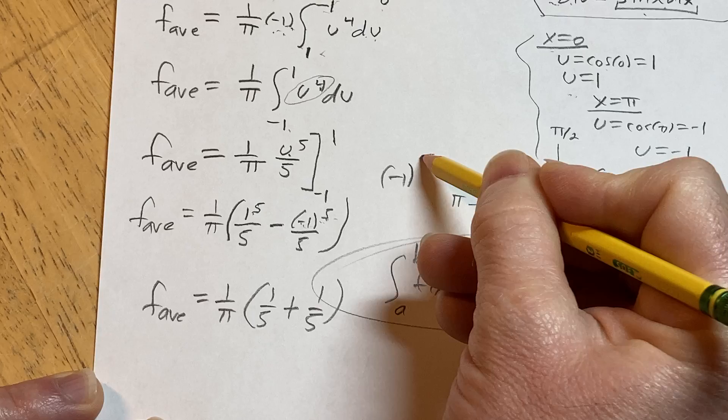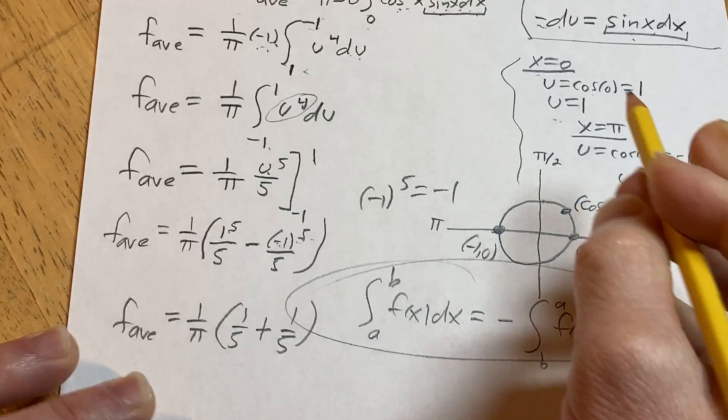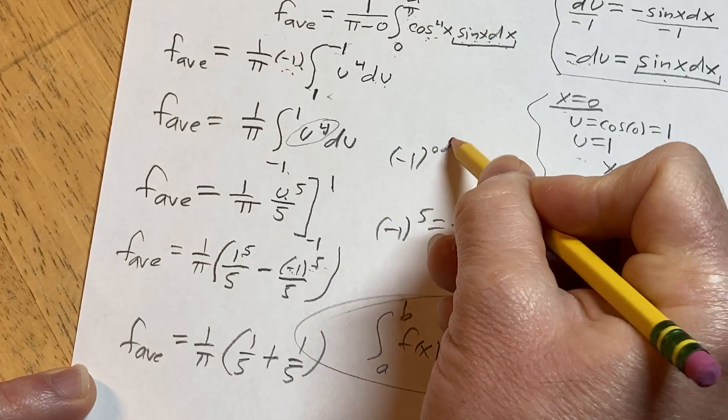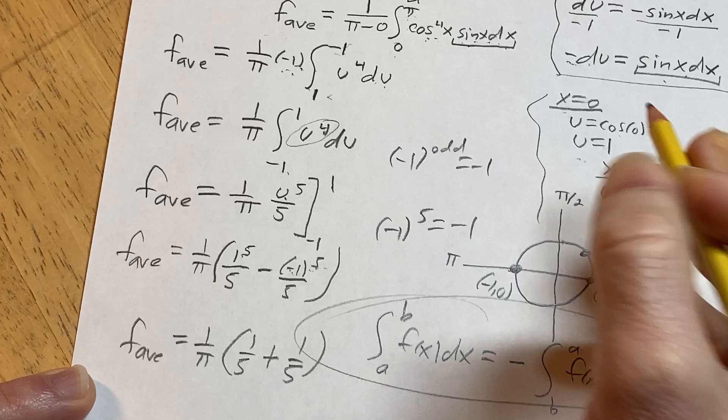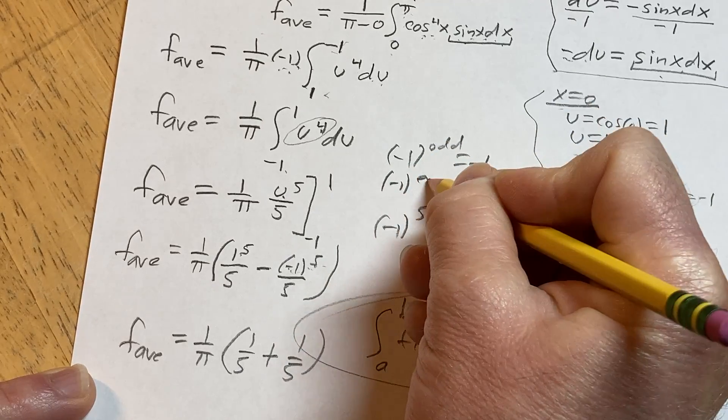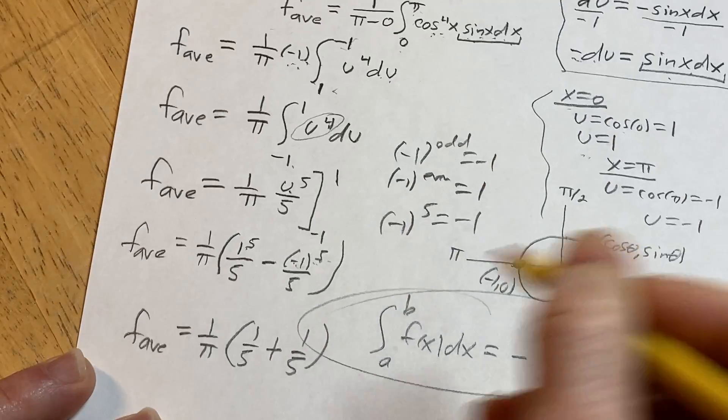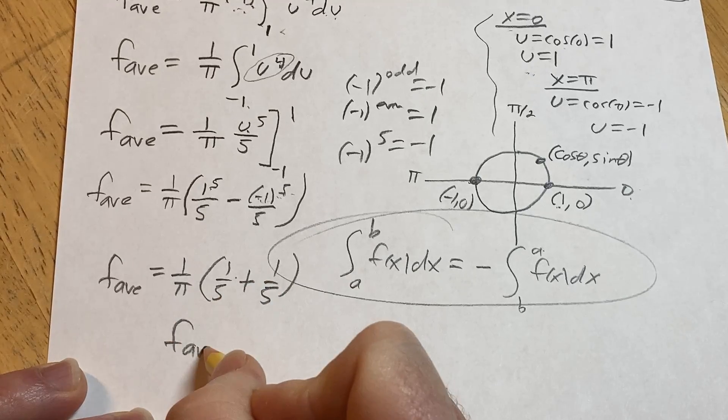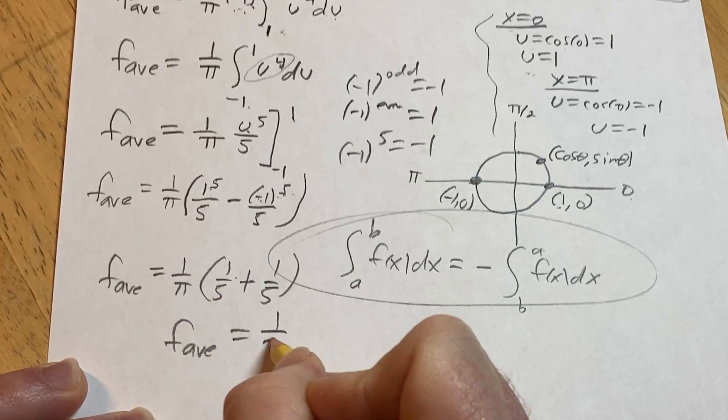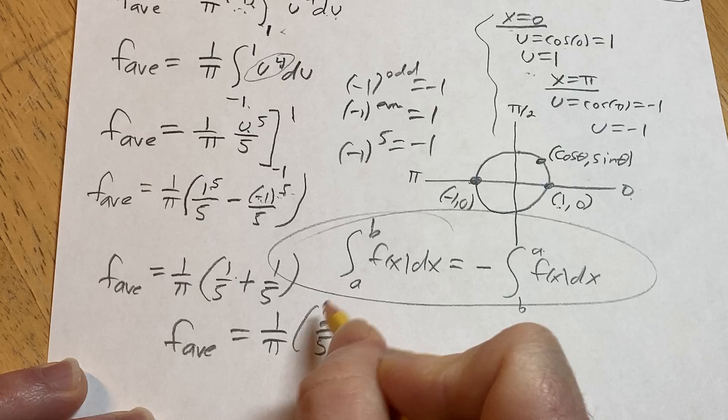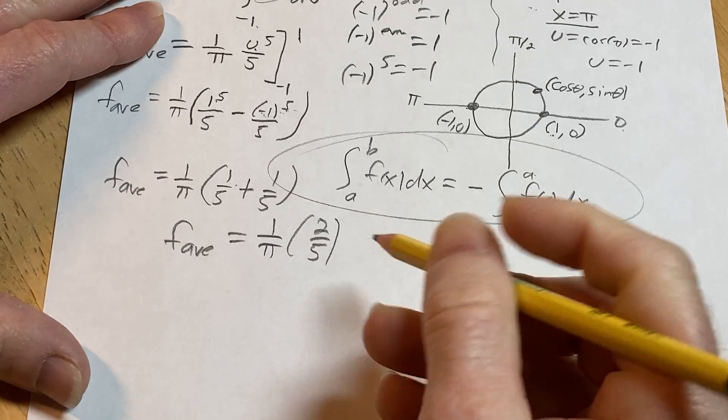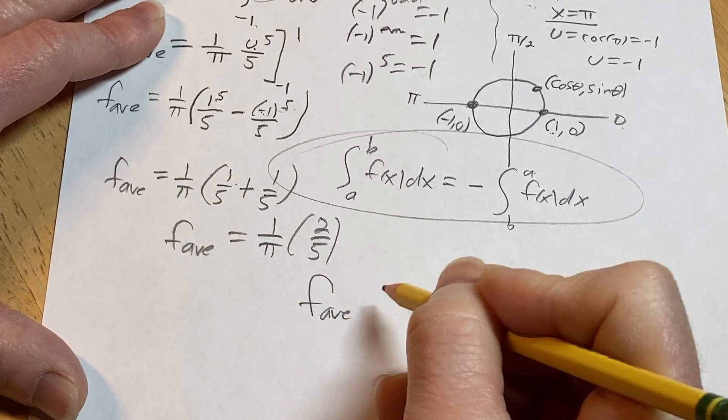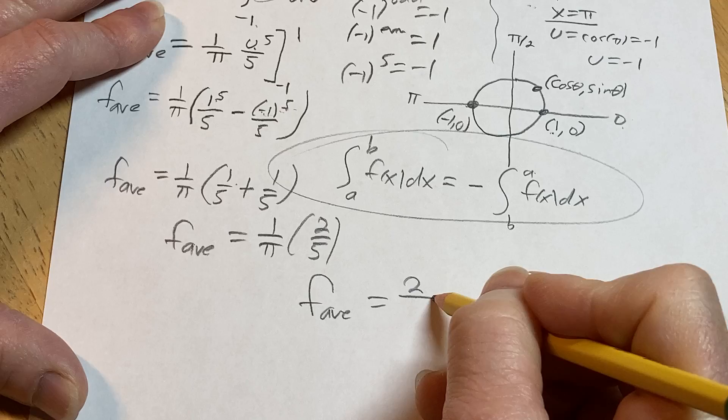So again, negative 1 to the 5th is negative 1. In general, negative 1 to an odd integer is going to be negative 1. And then negative 1 to an even integer is 1. So 1 fifth plus 1 fifth, let's not mess up here, is 2 fifths. So this is 1 over pi times 2 fifths. Now we're not going to mess up because we are professionals. So the average value of a function in this case is 2 over 5 pi. And that would be the answer in this particular problem.